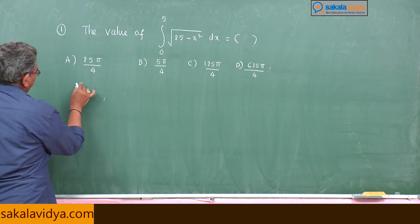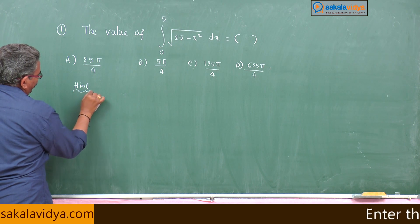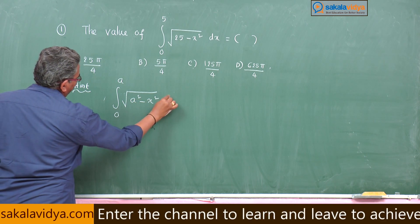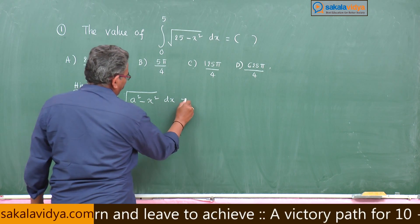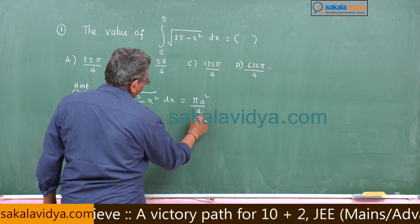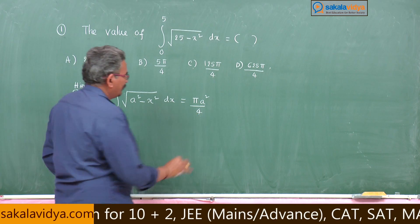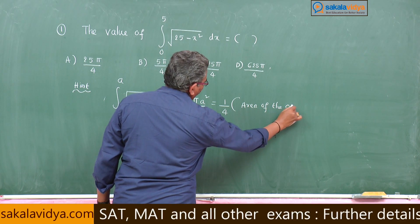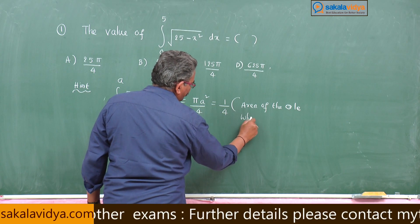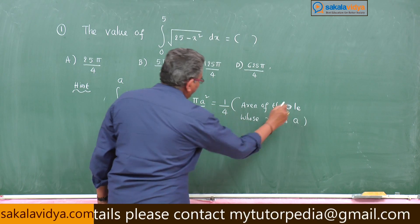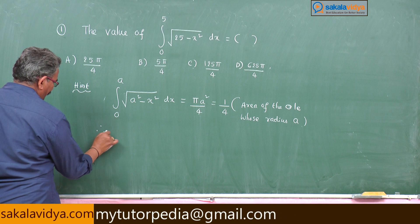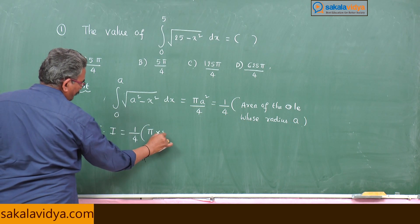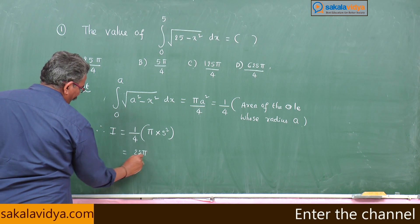We could remember this formula: the integral from 0 to a of √(a² − x²) dx appears to be the same thing. This is nothing but πa²/4, or we can write it as 1/4 of the area of the circle whose radius is a units. Therefore, our answer I is equal to 1/4 × π × 25, that is 25π/4.